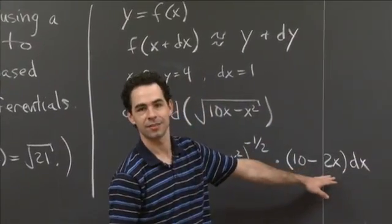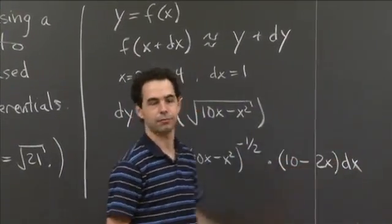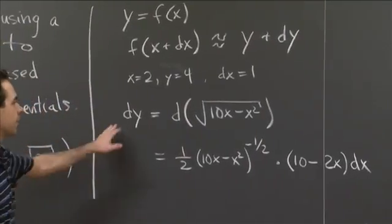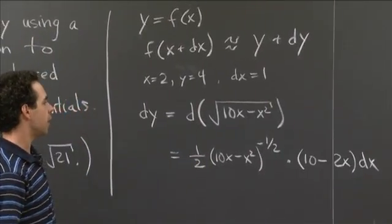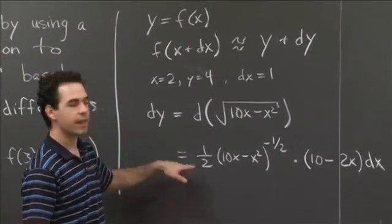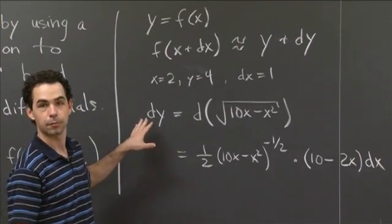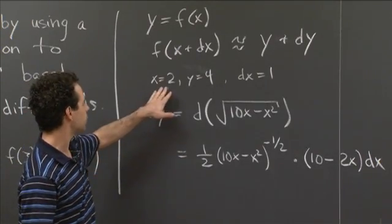So really, it's 10dx - 2x·dx. But I just pulled that dx out in front. So we have a differential equal to a differential. We want this value at this particular point in question. At this particular point, we have x = 2 and dx = 1.